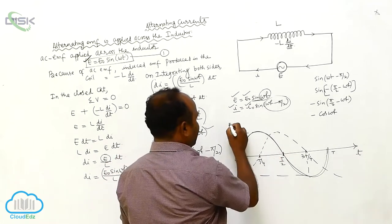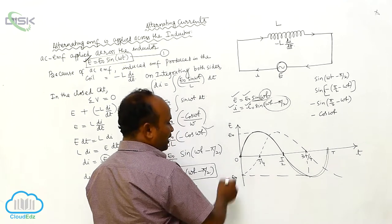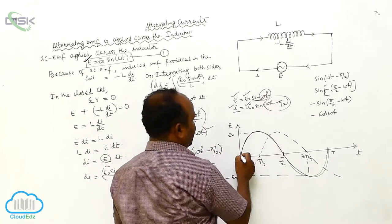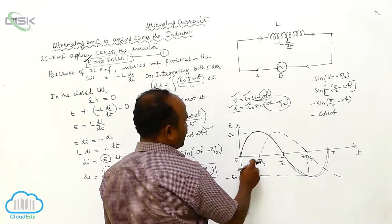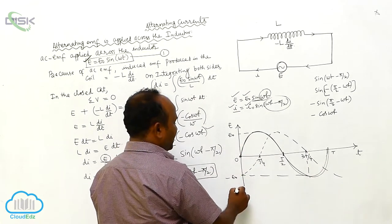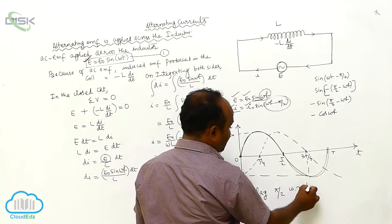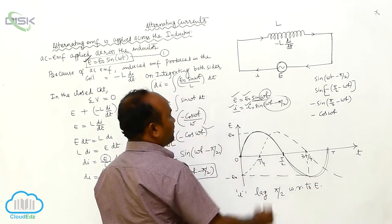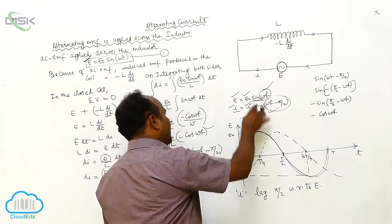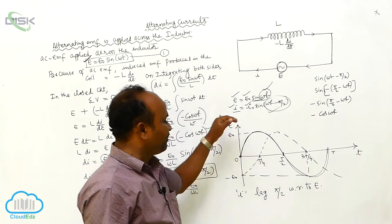The E versus t graph is like this, and the I versus t graph is like this. From this graph, the current is lagging the EMF — I lags by 90 degrees with respect to EMF. The current is lagging the EMF by 90 degrees. Therefore, this is the phase diagram related to the EMF and the current.